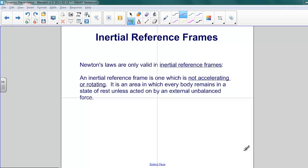Newton's laws are only valid in a special kind of reference frame. They're called inertial reference frames. An inertial reference frame is one which is not accelerating or rotating. It's an area in which every object remains in a state of rest or in a state of motion with constant speed and direction unless acted on by an external unbalanced force.